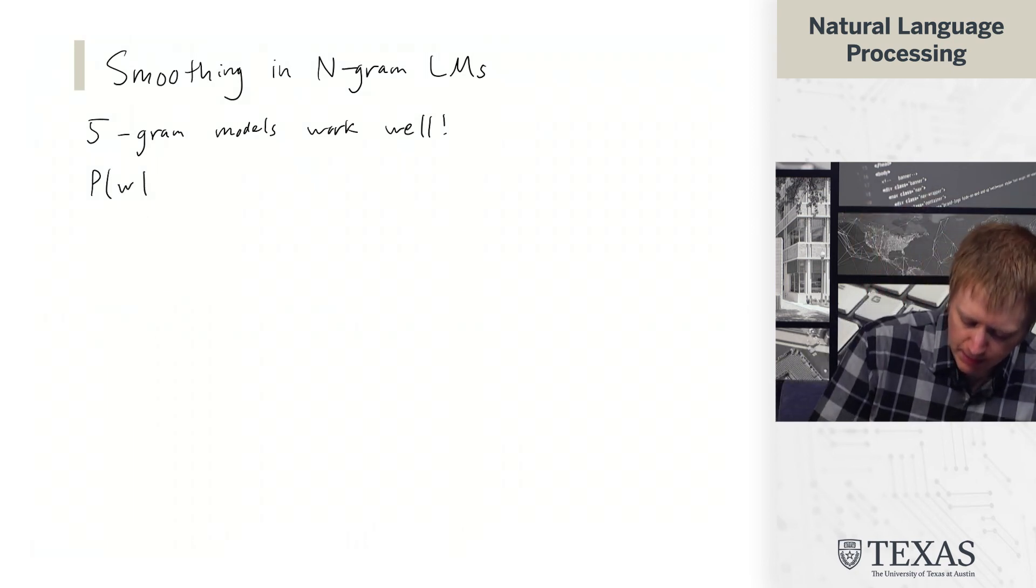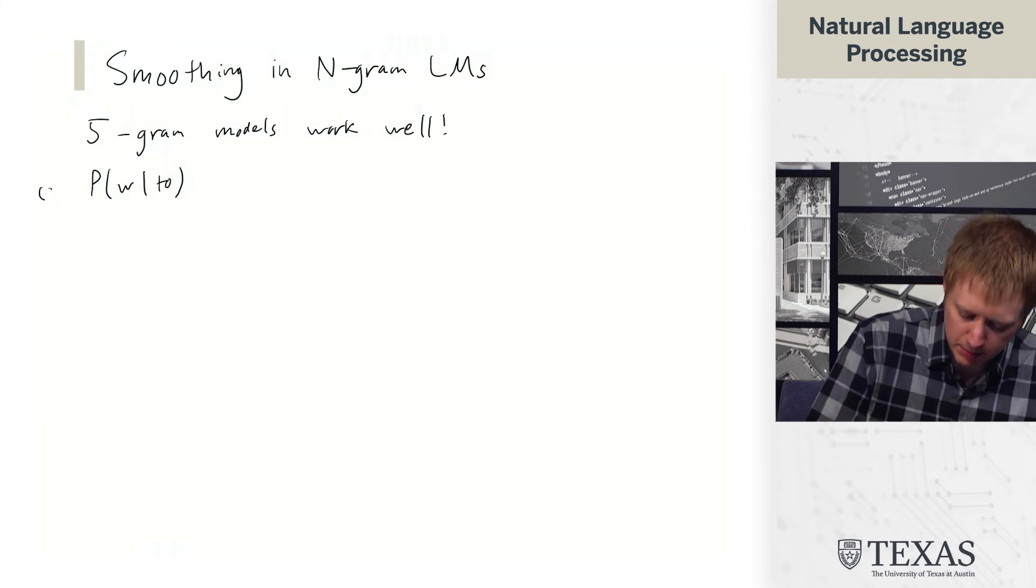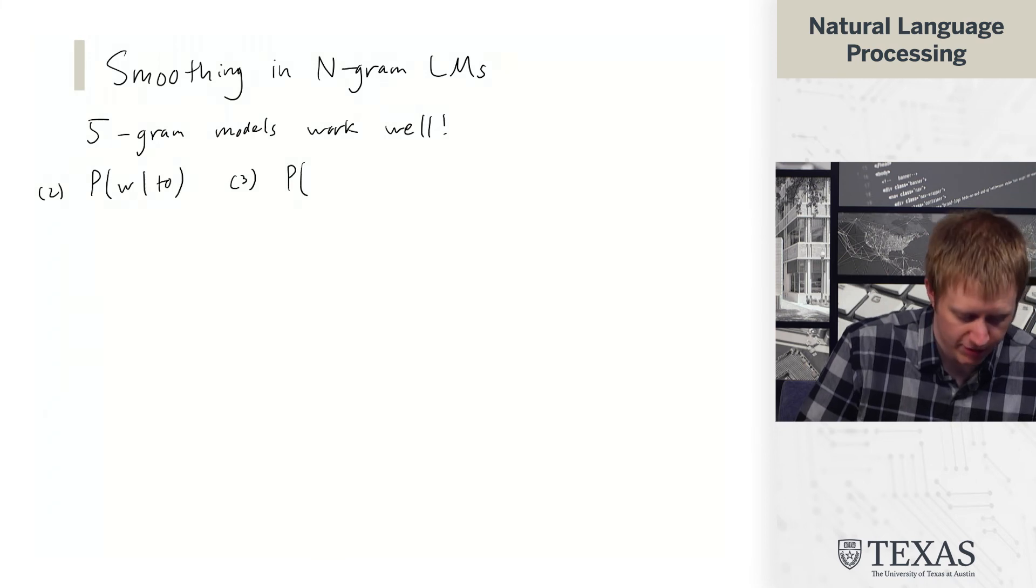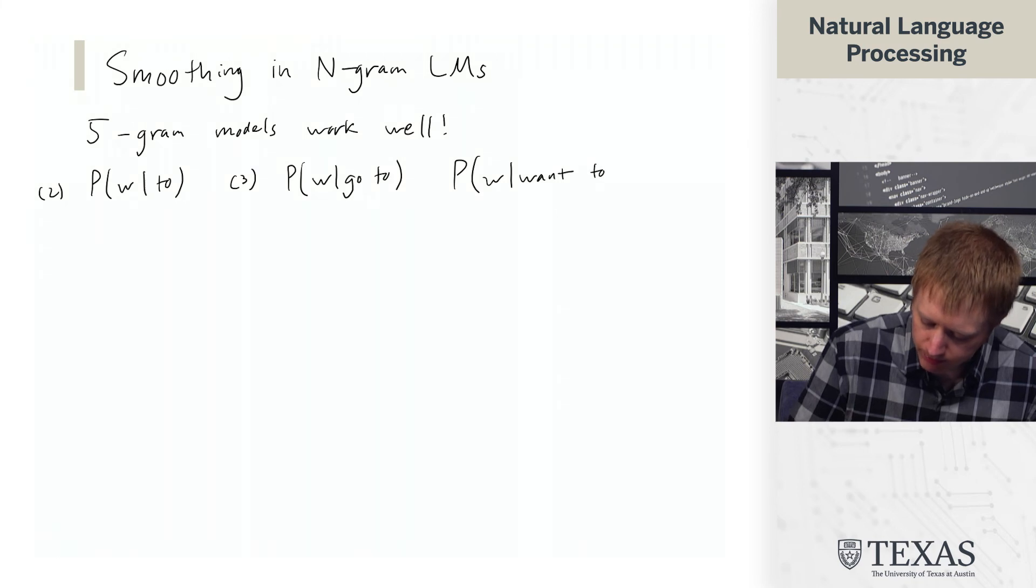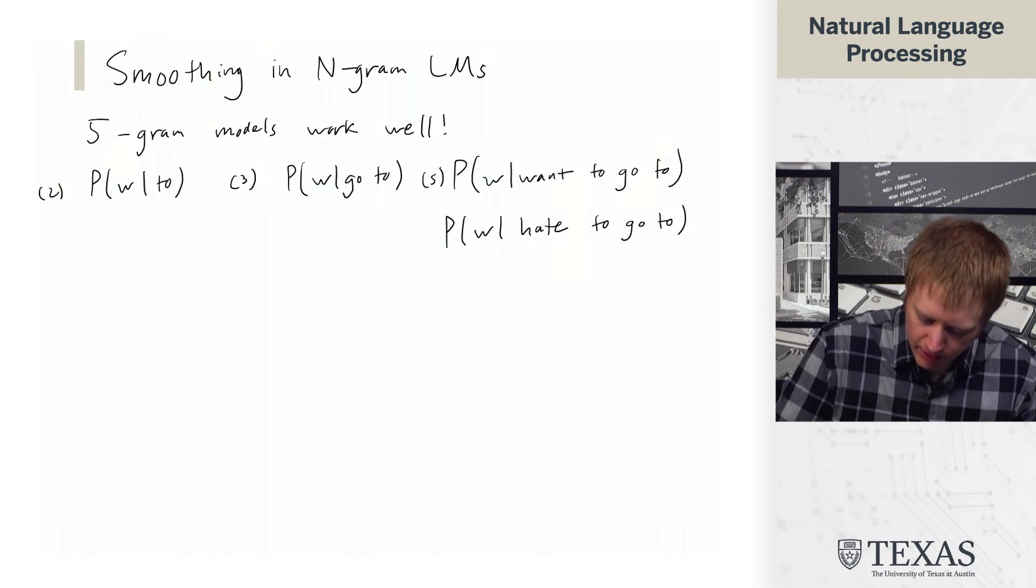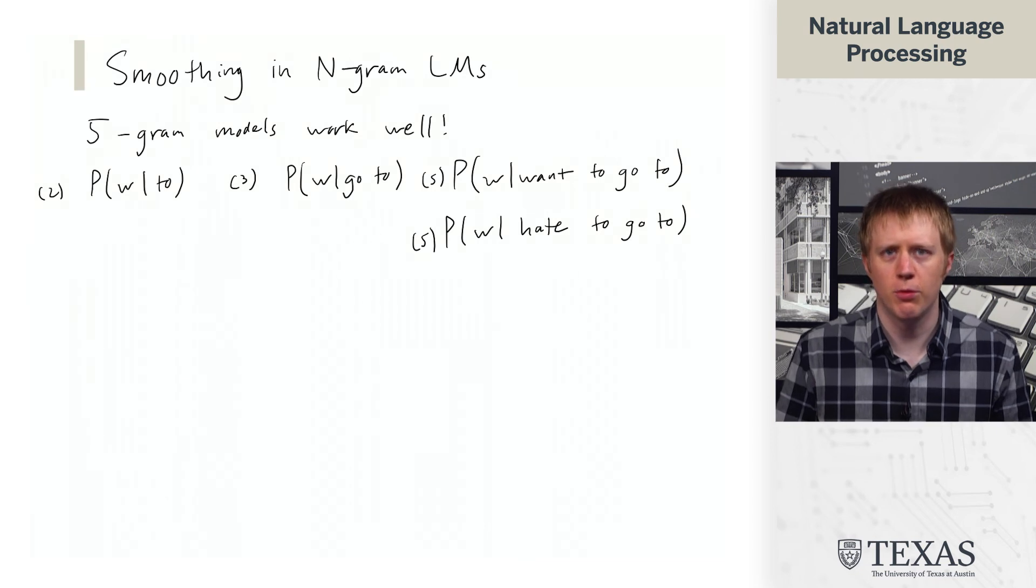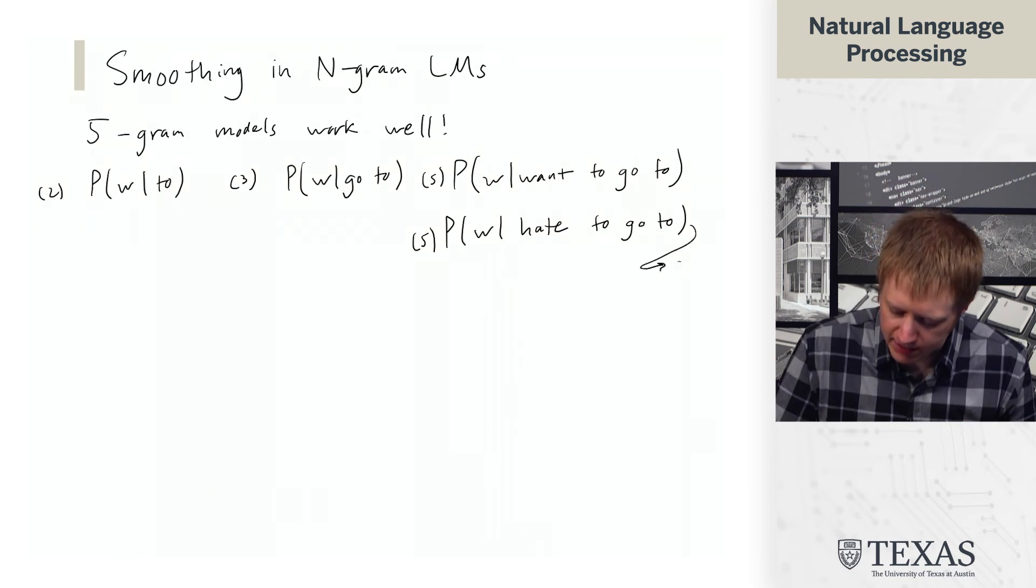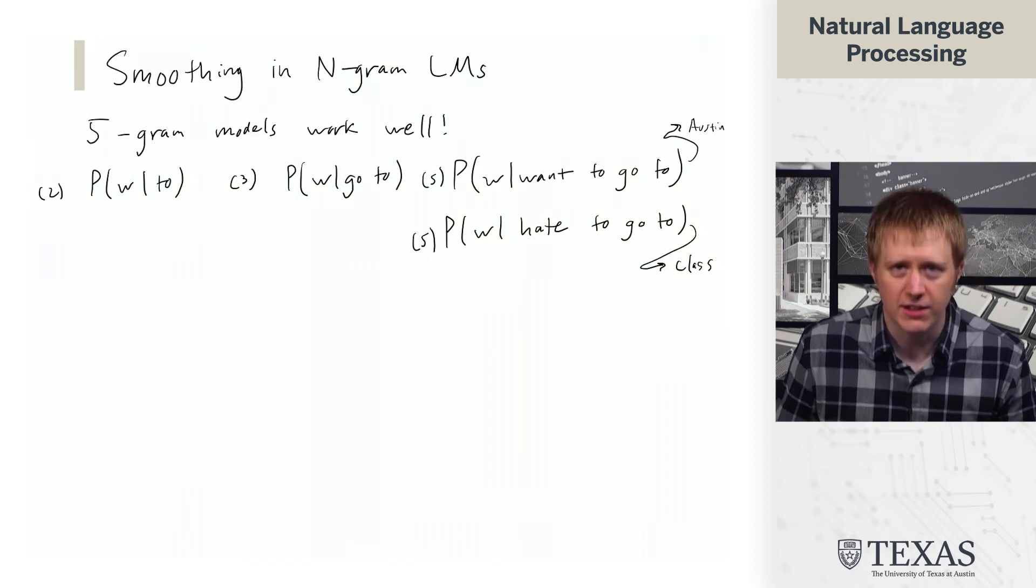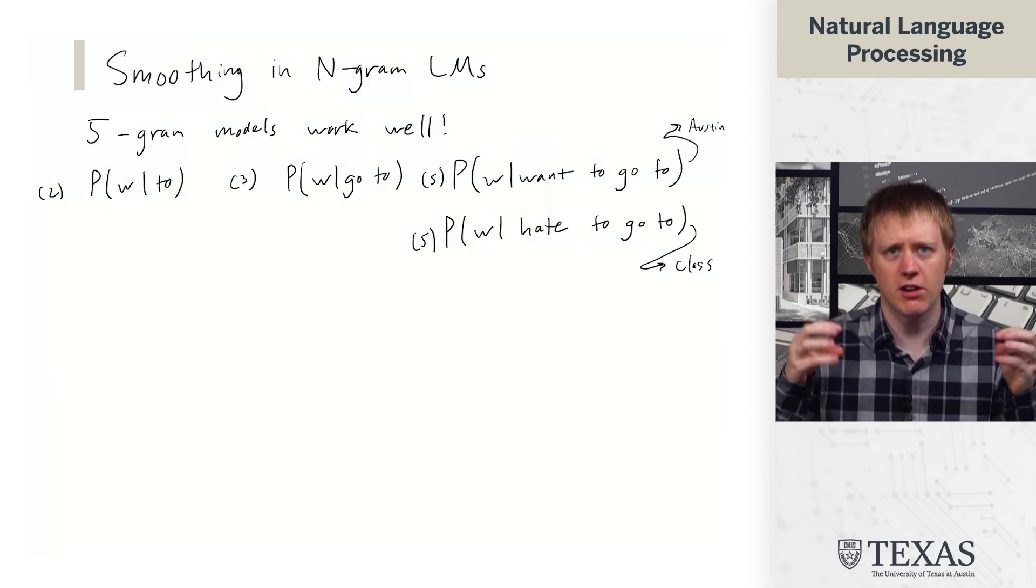And to just kind of illustrate this, if we think about the distribution of words after 2, so this would be a 2-gram model, versus the distribution of words after go to, versus the distribution of words after want to go to, or after hate to go to, then we can see that the distribution of words based on wanting or hating to go somewhere is probably going to be very different. Maybe we hate to go to class, but we want to go to Austin.